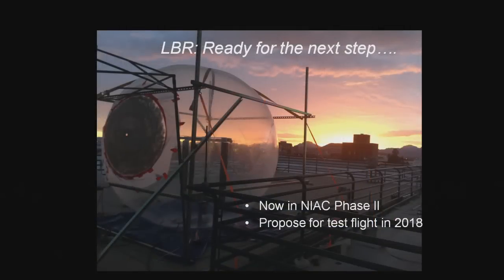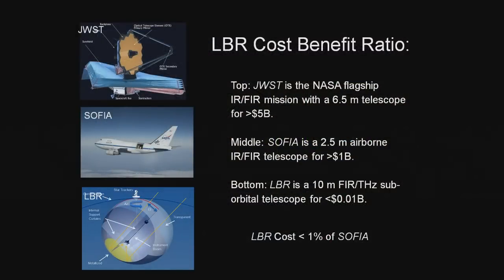Now we're in NIAC Phase 2, and we'd like to propose a test flight as early as 2018. As for cost benefit: JWST comes in at more than five billion dollars; SOFIA at more than one billion dollars with a 70–80 million dollar per year operating budget for a two-and-a-half-meter telescope. LBR with a two-flight series — one from Fort Sumner, one from Antarctica — comes in at under 10 million dollars. It doesn't do everything those missions do, but for terahertz work the cost comparison is striking — about as transparent as the balloon material.